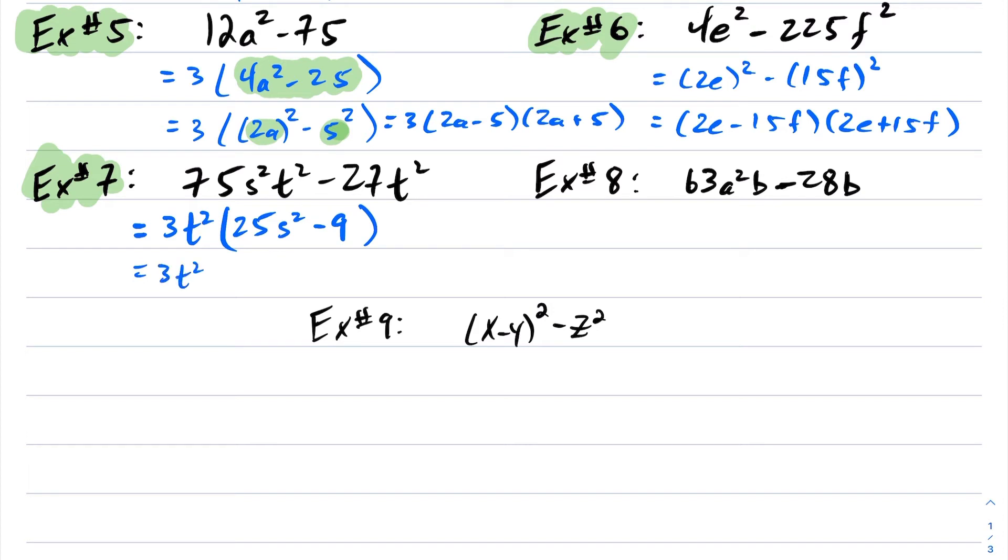Now what do we have here? This becomes 3t²[(5s)² - 3²]. And now, like we've been doing here, this is my x, this is my y. So this becomes 3t²(5s - 3)(5s + 3).